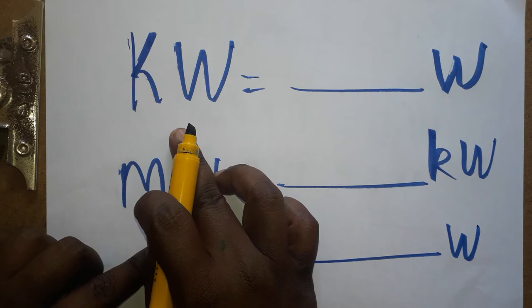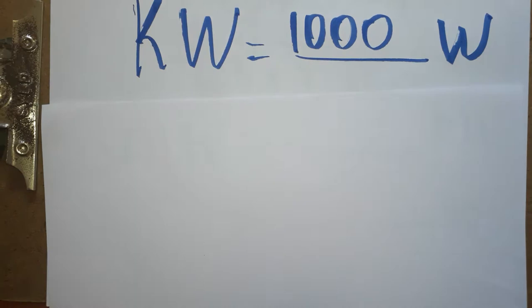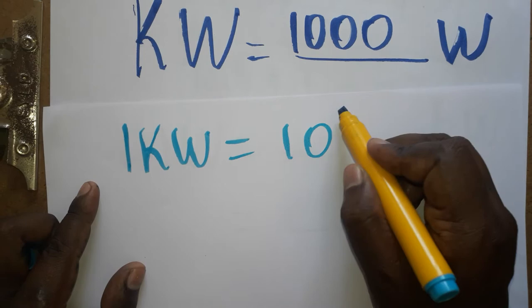So kilowatt can be taken as a thousand watt, or we can write it as 10 power 3. So 1 kilowatt is equal to 10 power 3 watt, because 3 zeros represents 10 power 3.